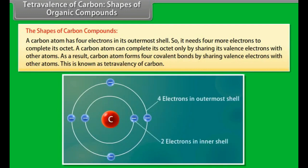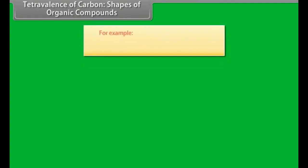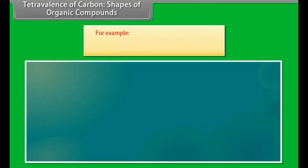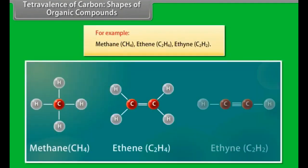A carbon atom needs 4 more electrons to complete its octet, and can complete its octet only by sharing its valence electrons with other atoms. As a result, a carbon atom forms 4 covalent bonds by sharing valence electrons with other atoms. This is known as tetravalency of carbon. For example, methane, ethane, ethyne.